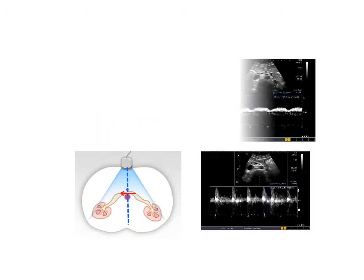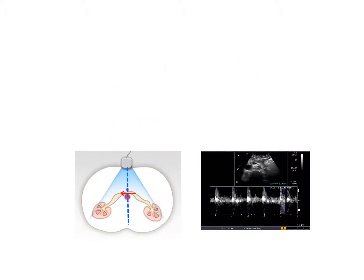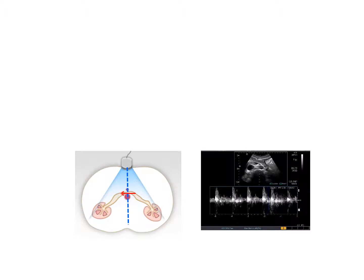But it is almost impossible to get clear Doppler spectra from this aorta-mesenteric portion, because the Doppler angle is around 90 degrees.